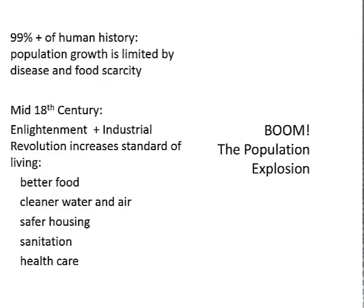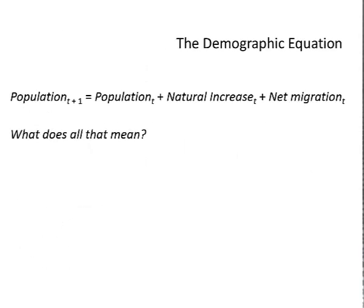All of these lead to a decline in the death rate, and that in turn leads to a population explosion. Social scientists called demographers have a central equation that is the basis of most of their work: population at t+1 equals population at t, plus natural increase, plus net migration.